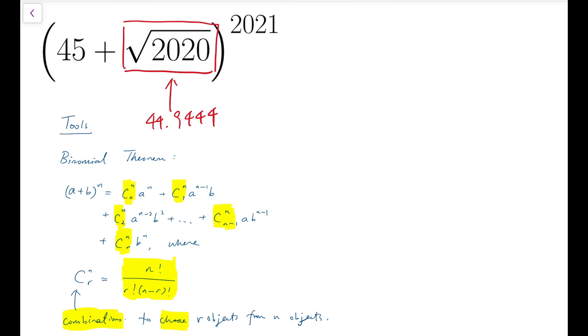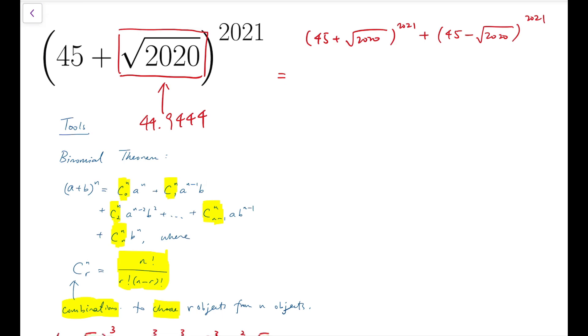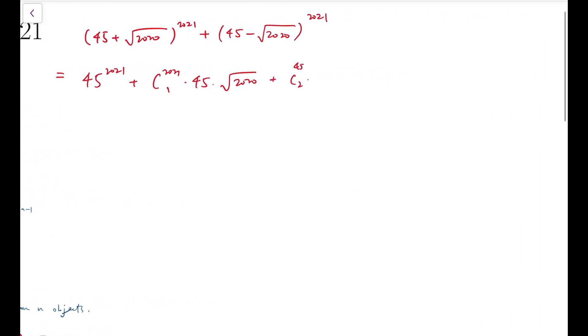Now back to our main problem. So we're going to do the same for this big number. I can say consider the original expression plus a similar number, but this time subtracting the root instead of adding it. And you can see it's actually 45^2021 + 2021C1 times 45^2020 times √2020, and then 2021C2 times 45^2019 times 2020. This time the roots cancel out because (√2020)^2 allows us to remove the root sign, and so on.